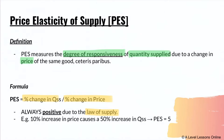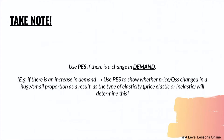For example, a 10% increase in price causing a 50% increase in quantity supplied gives a PES of 5. The reason for this relates to the law of supply — price acts as a signaling effect to producers. If there's an increase in price, producers see it as an opportunity to increase profits, and so they increase the quantity they supply.